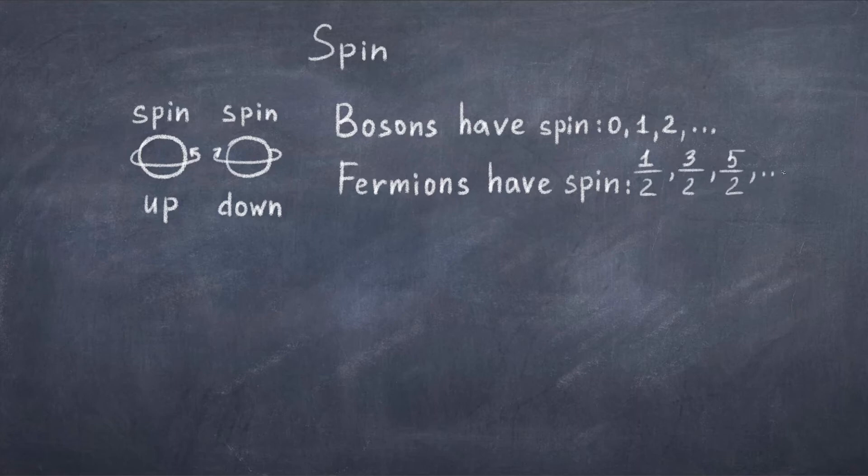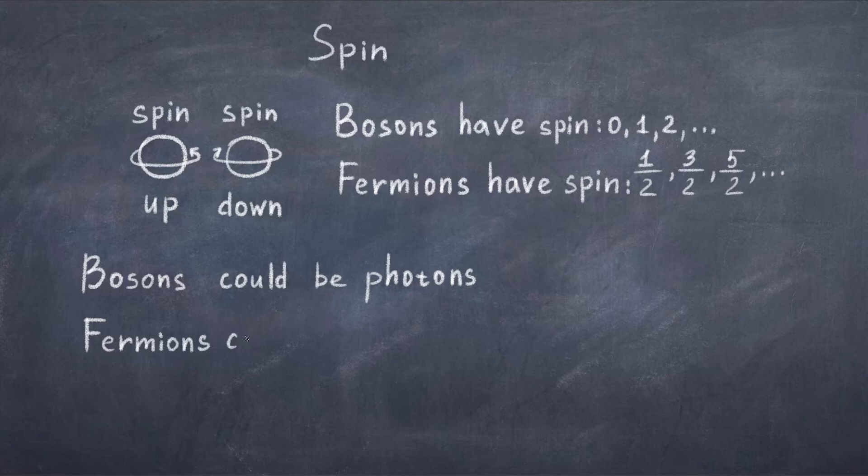The important part is that all particles have a spin number. Particles with integer spin numbers like 0, 1 and 2 are bosons. The particles with half spin numbers like a half, three halves, etc., they are fermions. Electrons and quarks are all spin half particles, thus they are fermions. Photons are spin 1 particles, thus they are bosons.